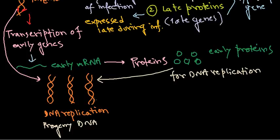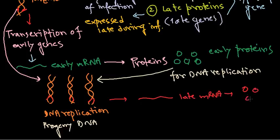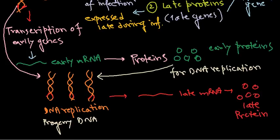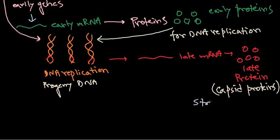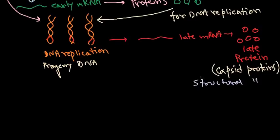Once we get more DNA, the late genes present in these DNA molecules start expressing. They produce late mRNA, which in turn produces late proteins. These late proteins are usually capsid proteins — they are viral structural proteins.